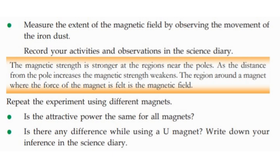As the distance from the pole increases, the magnetic strength weakens. The region around a magnet where the force of the magnet is felt is the magnetic field.